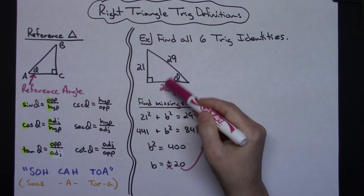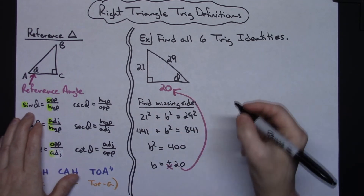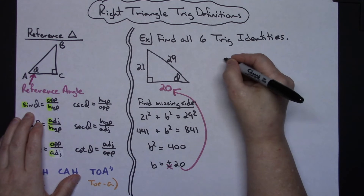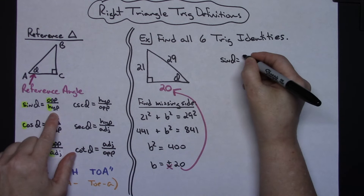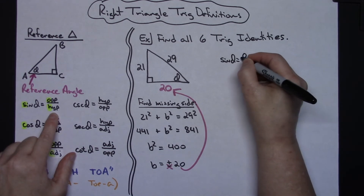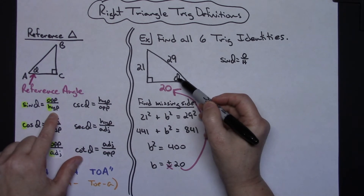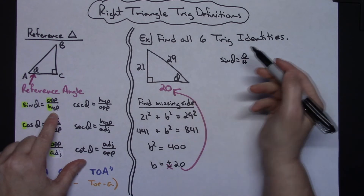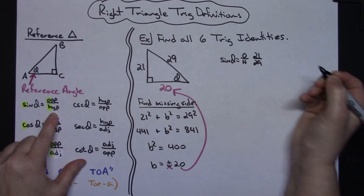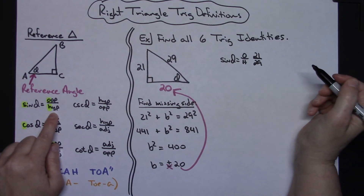Now having all three sides, I can look at those trig identities and find each one of them. Starting with sine of theta — by definition it's opposite over hypotenuse, so I'll write O over H. In reference to this triangle, the side opposite is 21 and the hypotenuse is 29, so sine of theta equals 21 over 29. If it could be reduced we would reduce to lowest terms, but otherwise we leave it like that.